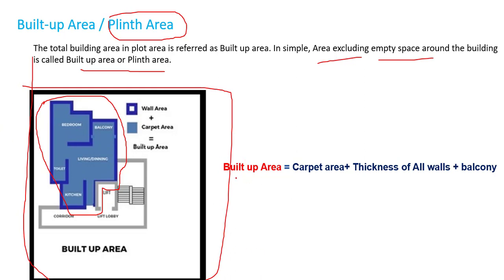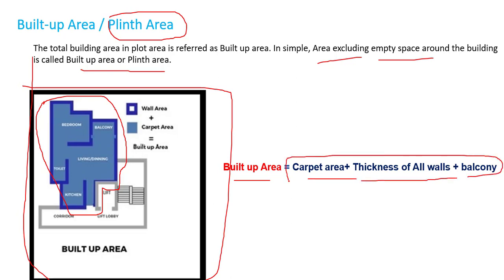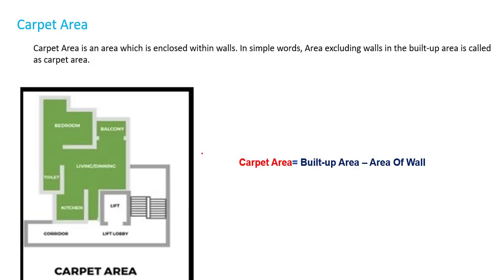What will be included in built-up area or plinth area? Carpet area, plus the thickness of all walls, and balcony will be included in built-up area or plinth area.